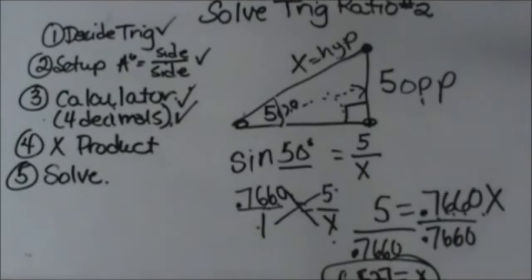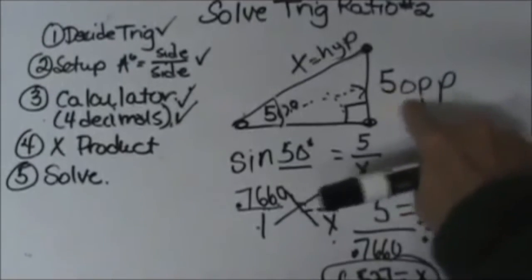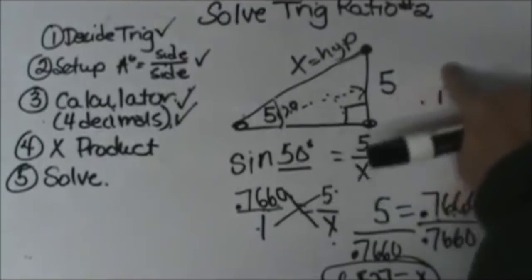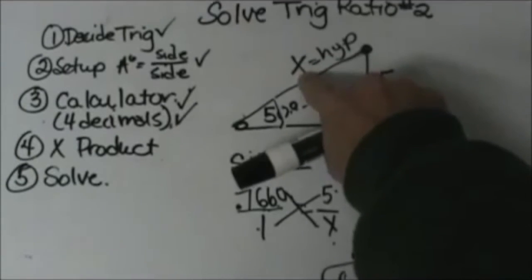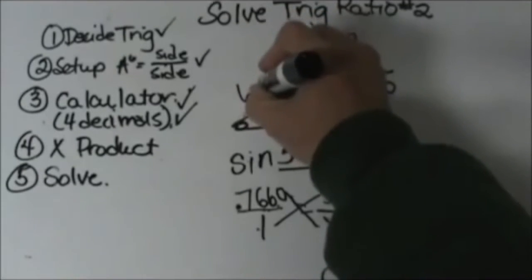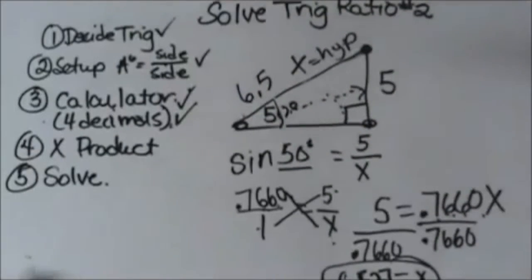Now let's see if that makes sense. The length of the side is 5. The length of the hypotenuse would be 6.5 if we round it off. And that sounds correct because the hypotenuse is always the longest side of a triangle.